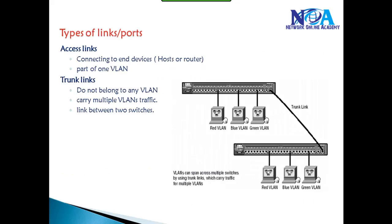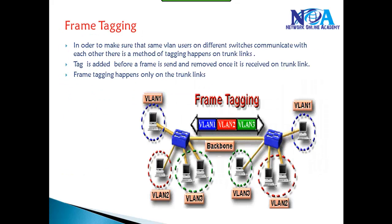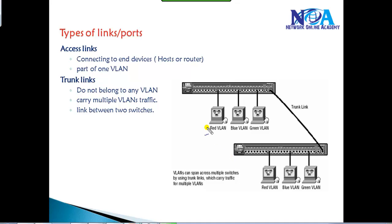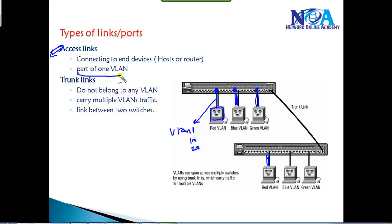To understand that process, before we get into frame tagging, let's understand the two types of links. The first type is access links — these are the links connecting to end devices. They belong to just one VLAN; by default they belong to VLAN one, but you can shift them to VLAN 10, 20, or 30 as needed. The link connecting switch to switch does not belong to any VLAN, but it carries multiple VLAN traffic — that is the trunk link.